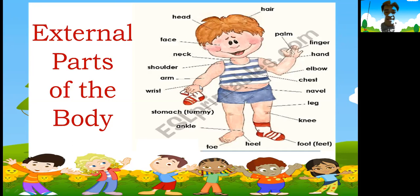This is wrist. Then arm. Shoulder. Neck. We have the face — face is like the front part of our head. So face, front part, plus hair equals head. And there we go for the external parts of the body.